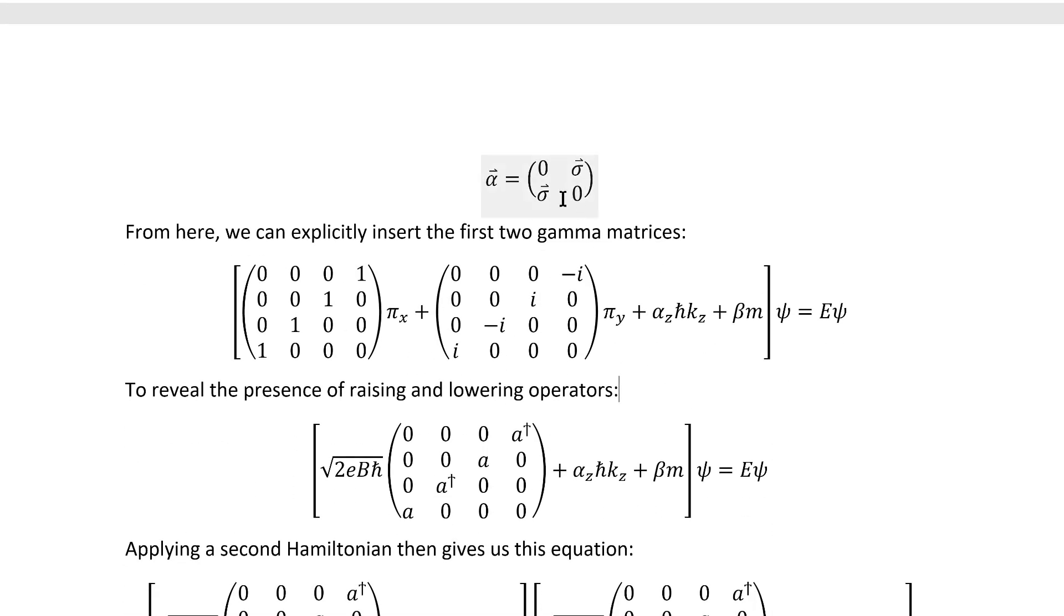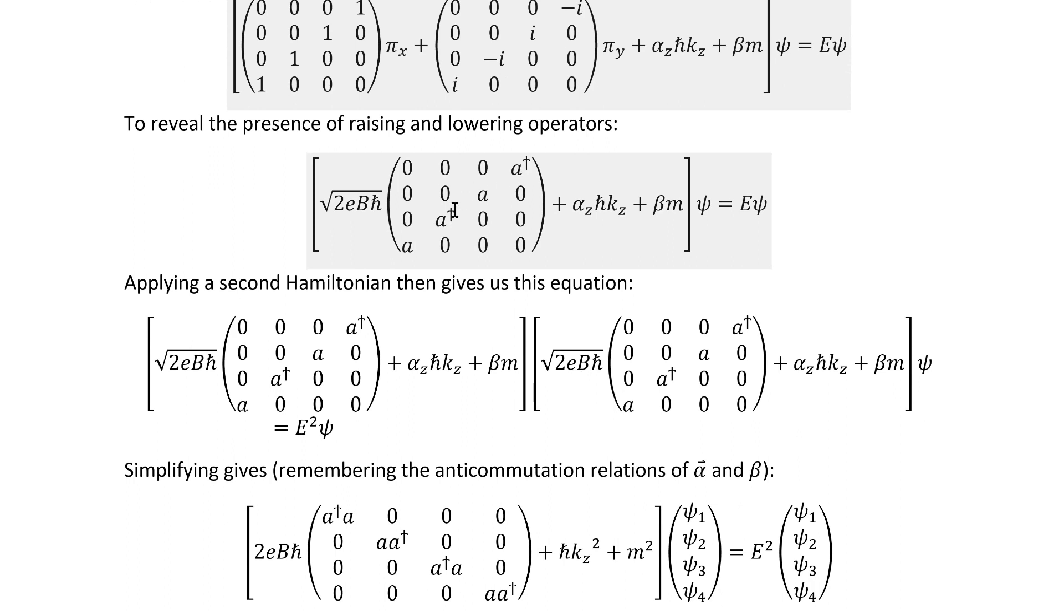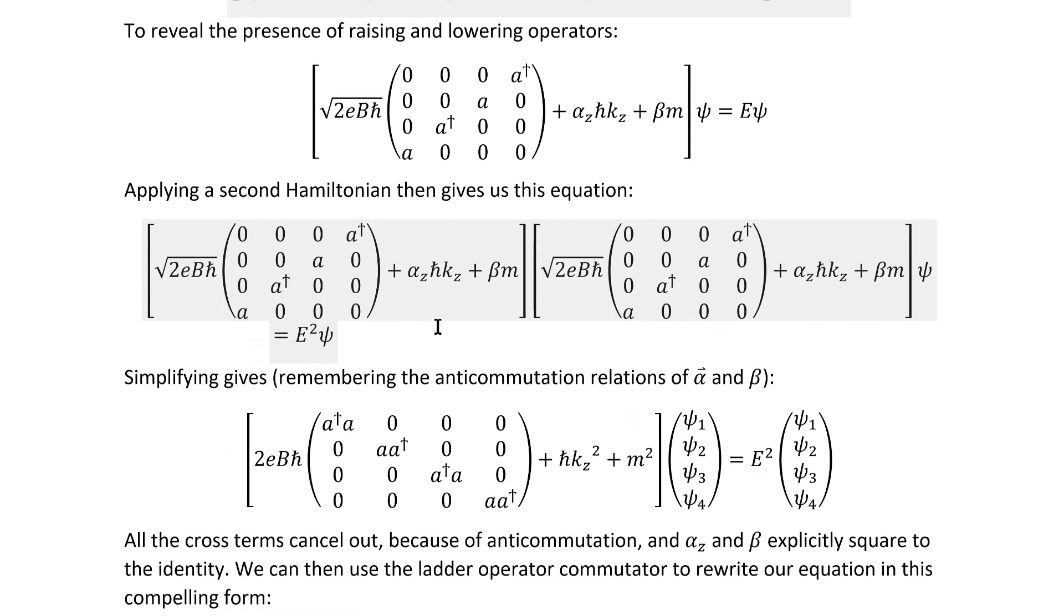Now if we remember what the alpha matrices are at least in the most ordinary representation which is the one that's really useful to us here and insert just the first two, we immediately see A's and A dagger showing up at least if we also multiply and divide by this square root here. But this equation is still first order so there's no way for the A dagger A products that we know how to turn into n's to show up. This is where the clever trick comes in.